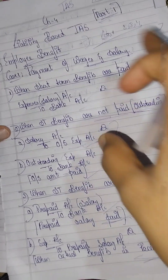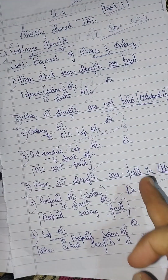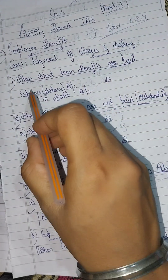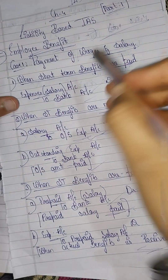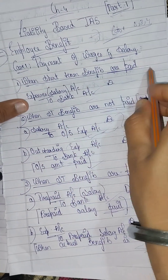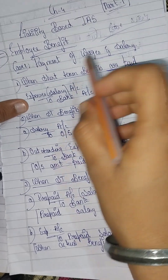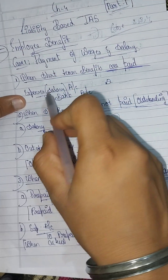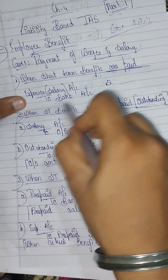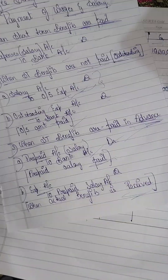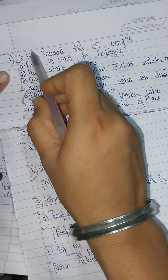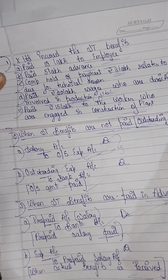So this is the form of journal entries. What is the salary pay entry? The paid entry is: salary account debit to bank account. So you can pay 10 lakh rupees to employees. The entry is salary account debit to bank account.